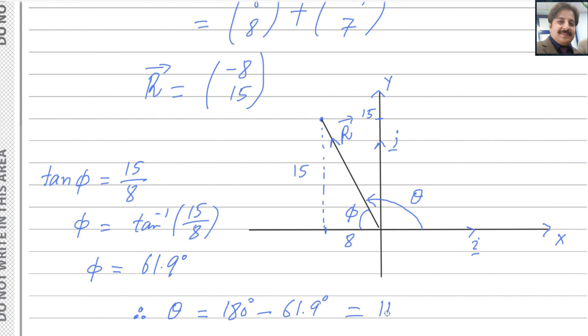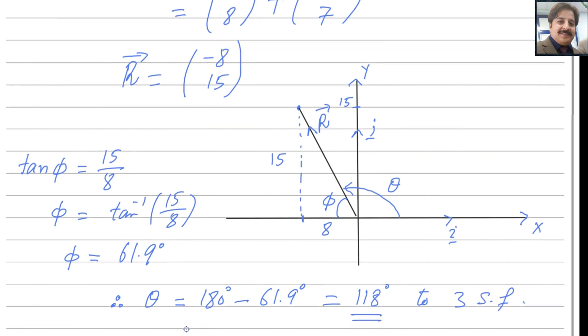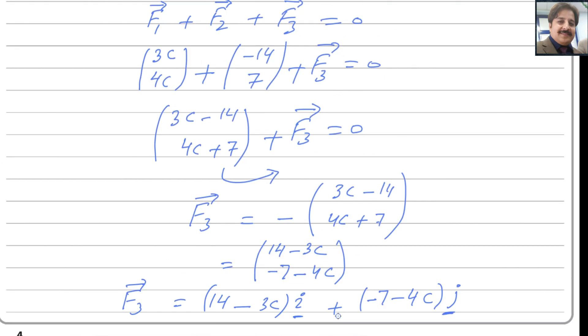Better you round your answer to 3 significant figures. So 118 is the answer. Second part is done. This is the answer for the second part. Let's move on for the next part.